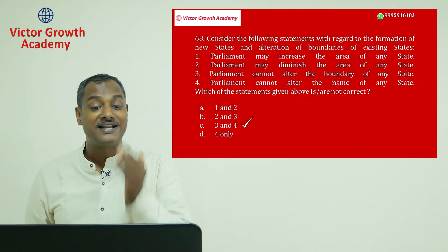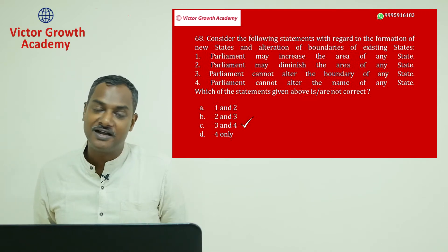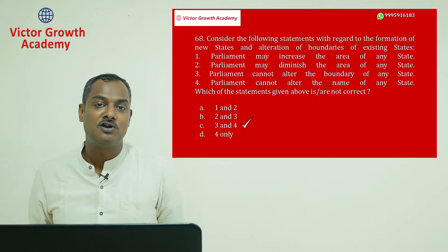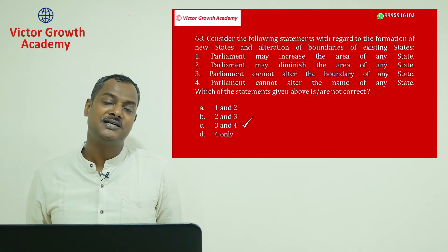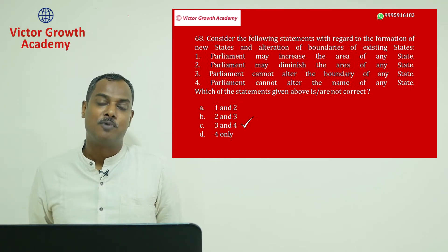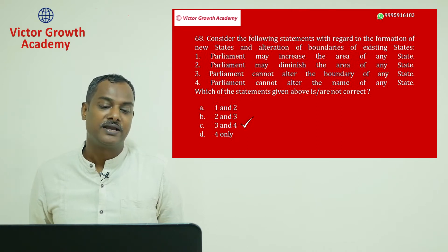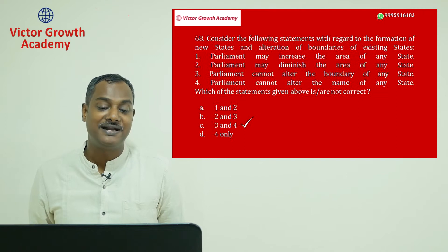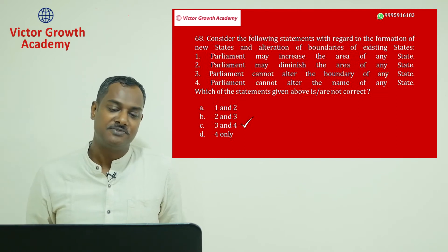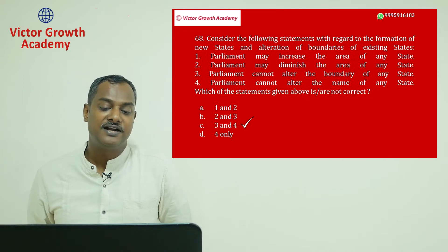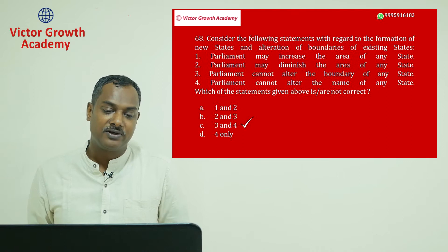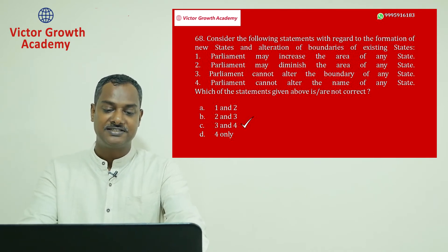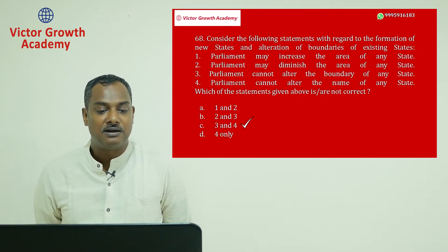Question number 68: consider the following statements regarding the formation of a new state or alteration of boundaries. This is very relevant after Jammu & Kashmir became a Union Territory. Parliament may increase or diminish the area of any state — both are possible. However, the statement that 'Parliament cannot alter the boundary of any state' is incorrect — Parliament can alter boundaries, as seen in the J&K case. Question 68 answer is C.